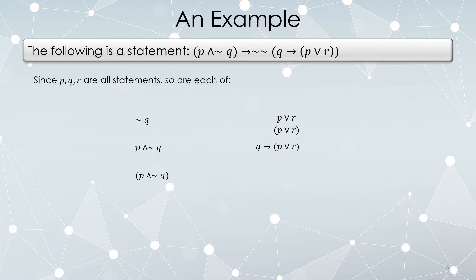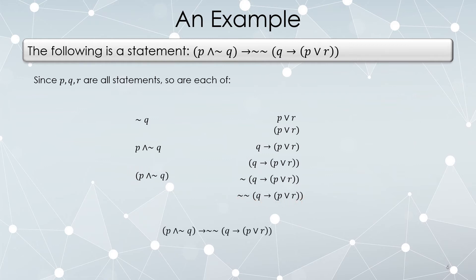Since P or R is a statement and Q is a statement, I can put a conditional arrow in between them. Q implies P or R is a legitimate statement. Therefore, I can put parentheses around it and negate it, giving a legitimate statement. And if this overall is a statement, I can negate it again — and that is also a legitimate statement. We have shown that both parts can be built up as legitimate statements, and therefore we can put a conditional arrow in between them.